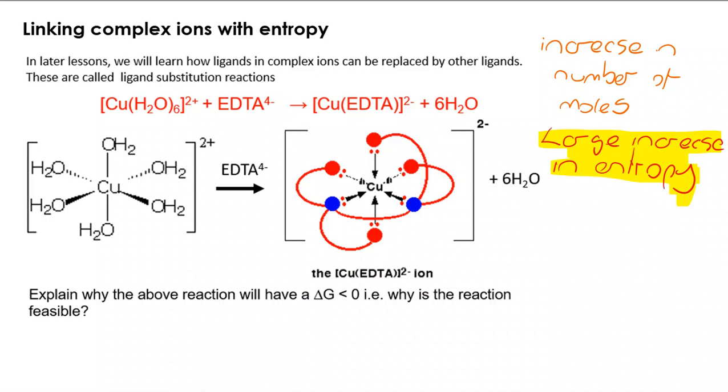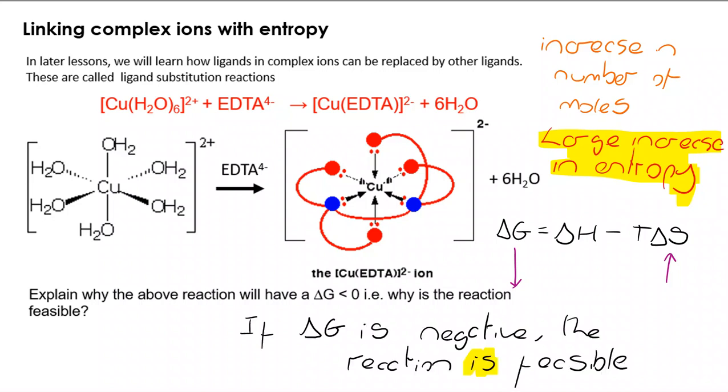If we then consider Gibbs free energy, delta G is delta H take away T delta S. My T delta S is going to be high because there's going to be a large increase in entropy. That therefore means that you're likely to see that delta G is below zero. Remember that delta G must be below zero or less than or equal to zero for a reaction to be feasible. So there we have the reasons why.